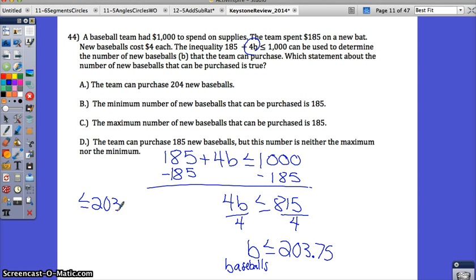Okay. Let's read the options and see what we have. The team can purchase 204 new baseballs? No. If they buy 204 they'll be a little bit over their budget so that's out. The minimum number of new baseballs they can purchase is 185. Well that's not true. They can purchase one or none. The minimum could be any number really. The absolute minimum number that they can buy would be zero.